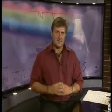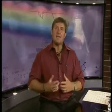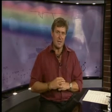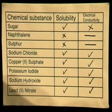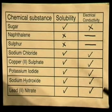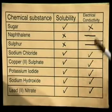If electrical conductivity does take place, then the light bulb will glow brightly, just like we saw with the sodium hydroxide experiment. However, if there is no electrical conductivity, then the light bulb will not glow at all. We are going to repeat this for all six experiments and note our observations in the table. Here is a table that indicates the results of our electrical conductivity experiments, with positive results indicated by a tick and negative results by a cross.